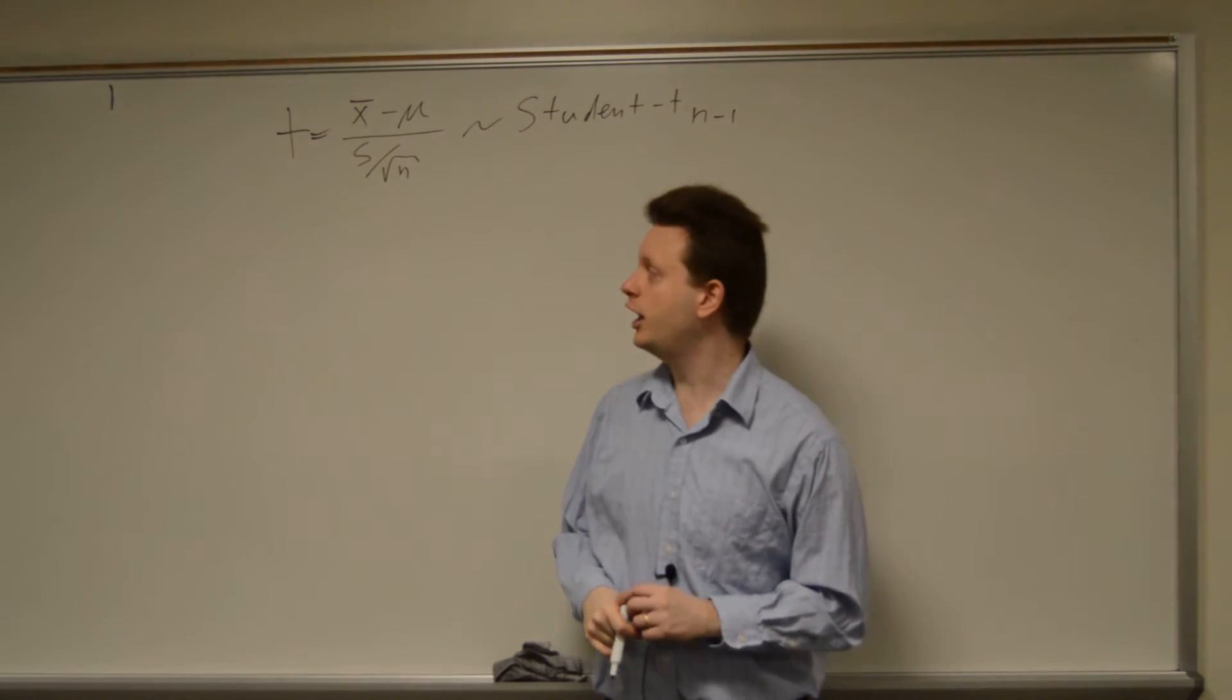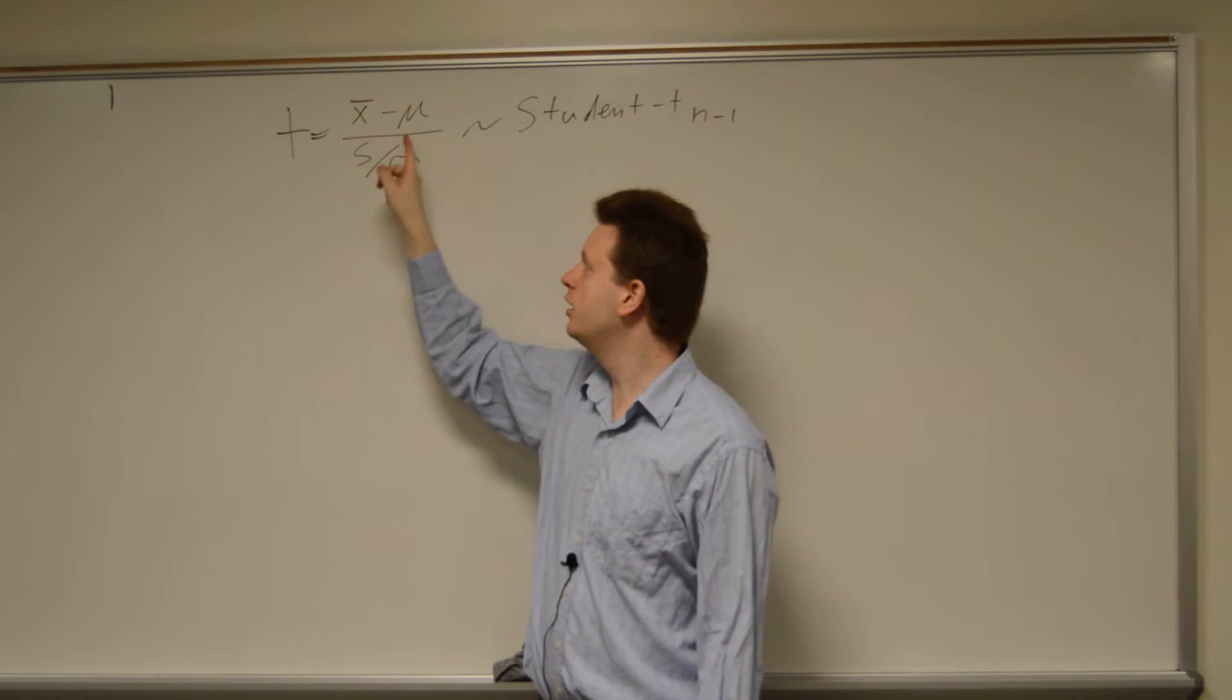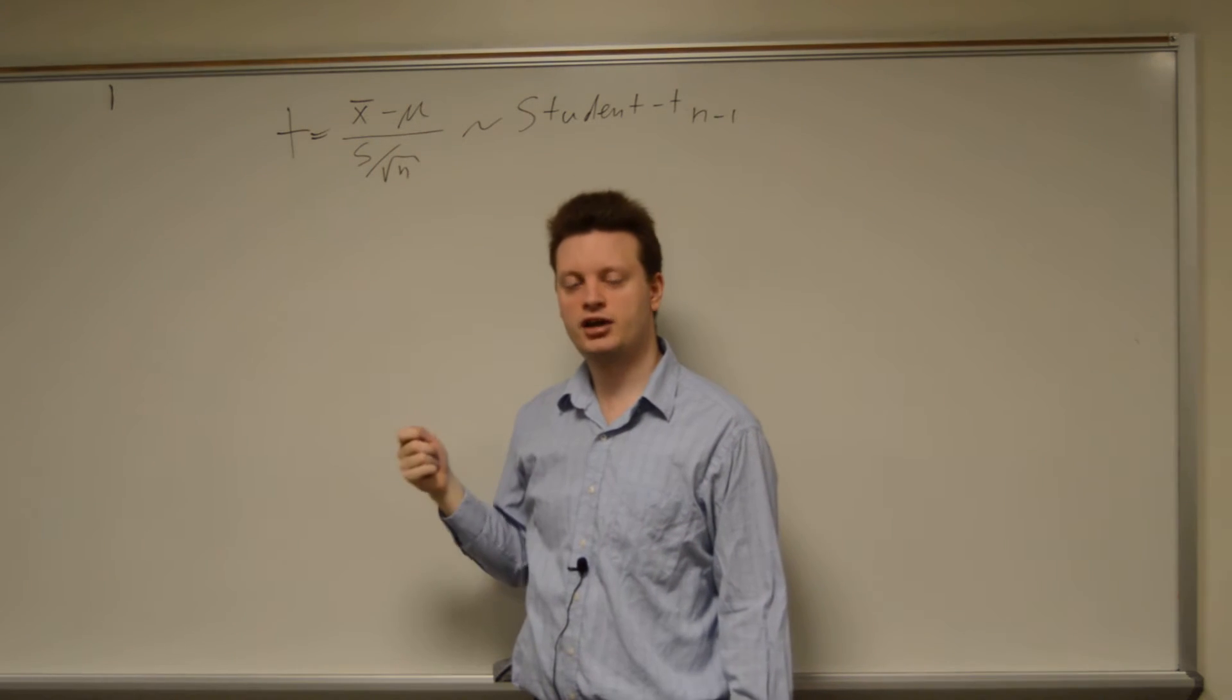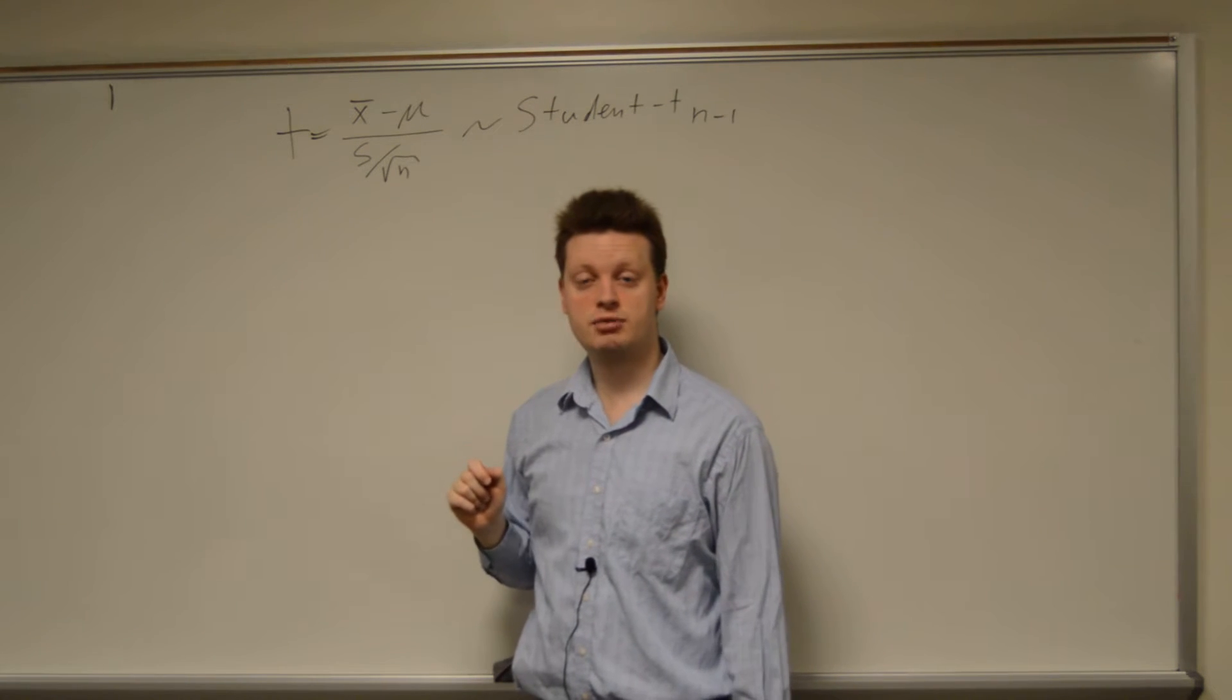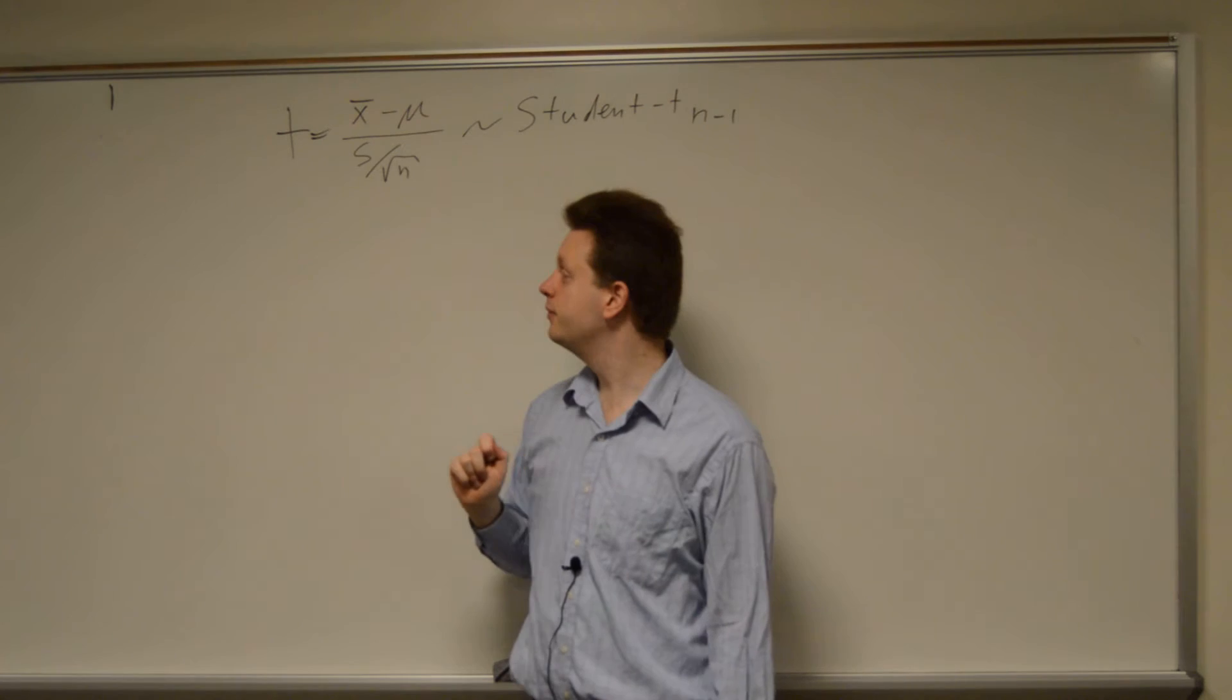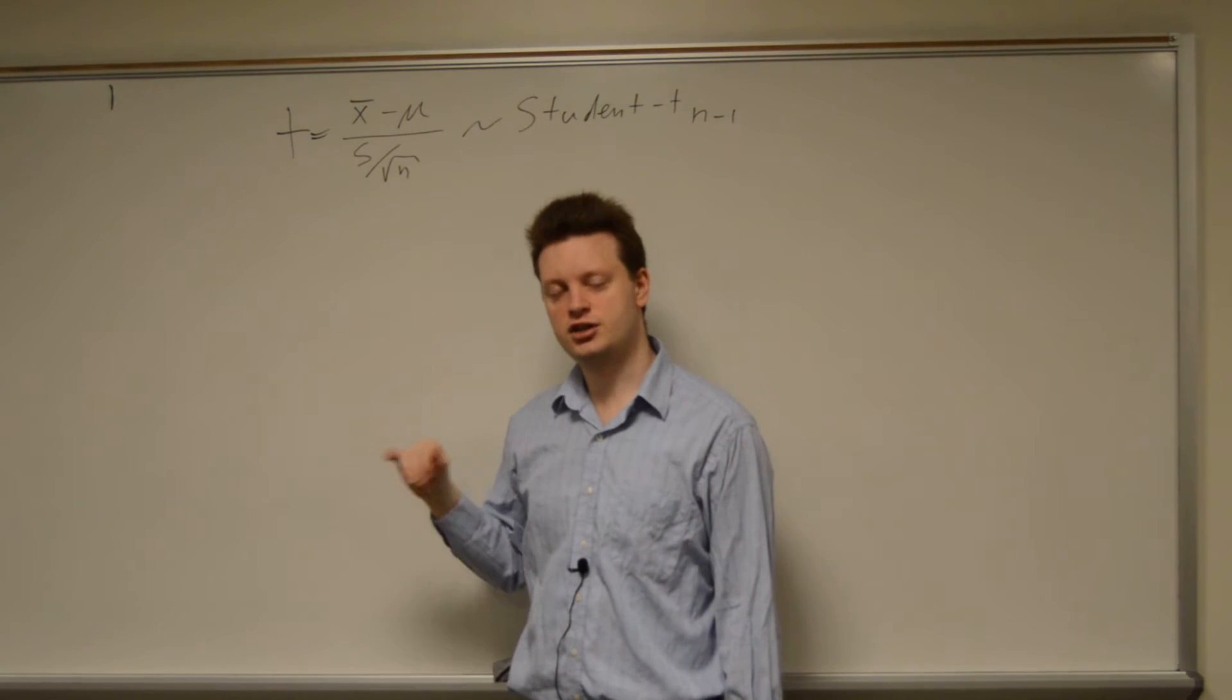What are all these values? x-bar is the estimated mean, mu is some value I want to test, s is the estimated standard deviation, and square root of n is the square root of the numbers of observations I have.